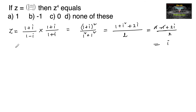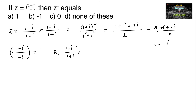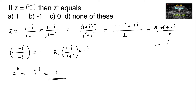So we can remember that 1 plus i upon 1 minus i is equal to i, and 1 minus i upon 1 plus i is equal to minus i. These are standard results you can just remember. Now, z to the power 4 is nothing but i to the power of 4, and i to the power 4 equals 1. So we can go with option A.